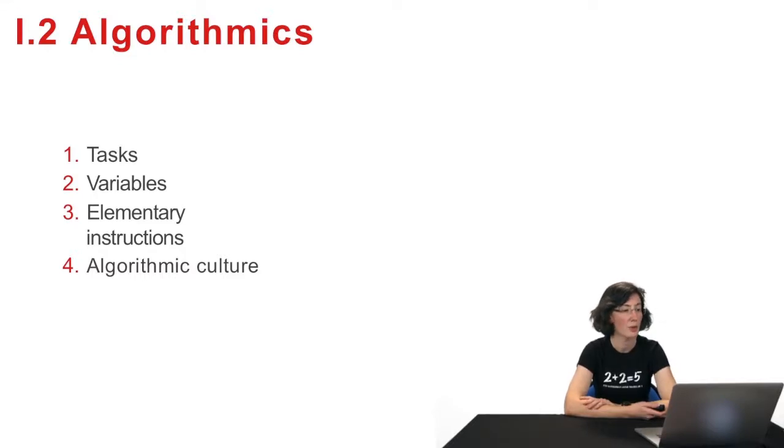Hi! In this part on algorithmics, we've seen tasks, the division of an algorithm into small simple tasks. Then we've seen variables and the complete list of elementary instructions, allowing to write every algorithm. We'll now take a step back from algorithmics as a science, to show you what else we can do, more generally.